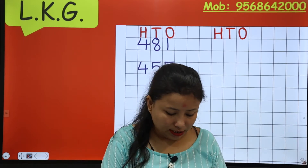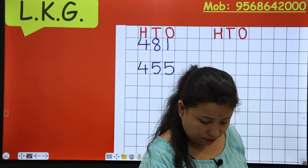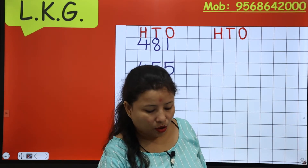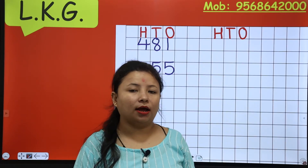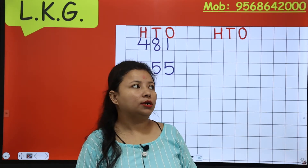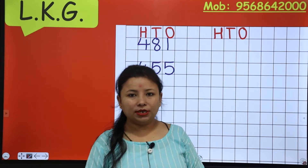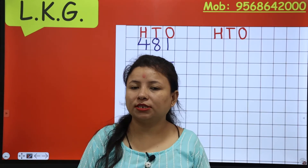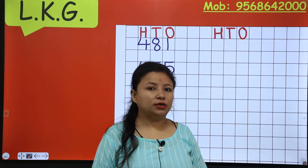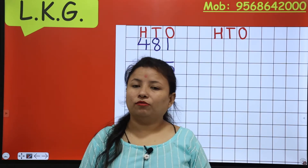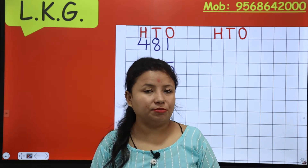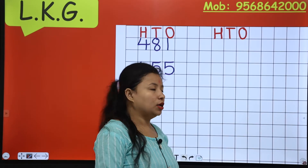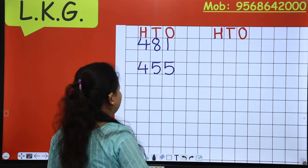Now the next number is 479. 479 — the sound of 7 is coming. So 479: 400 it means 4, 70 it means 7, and 9. 479.